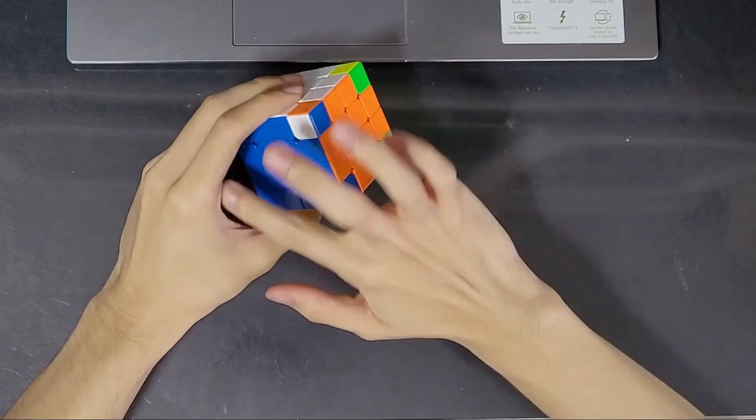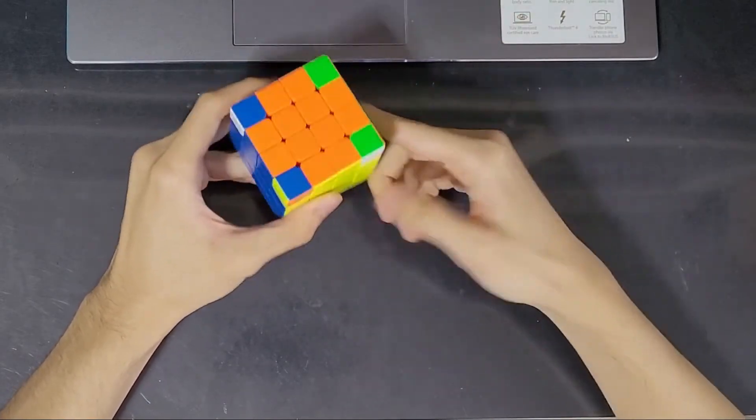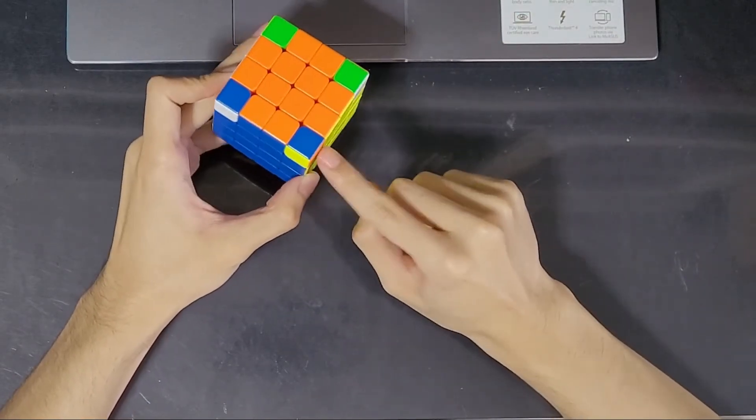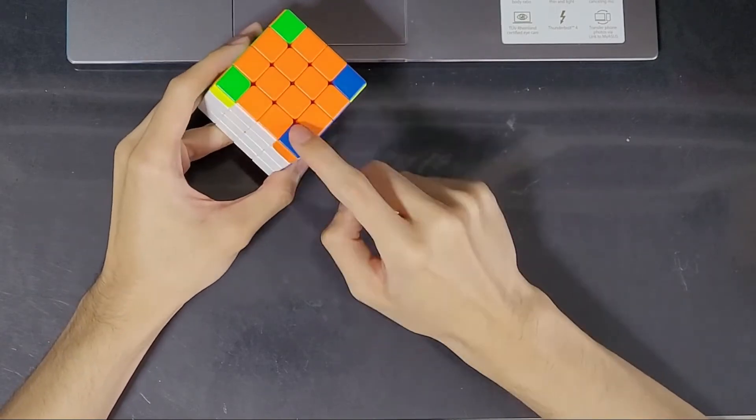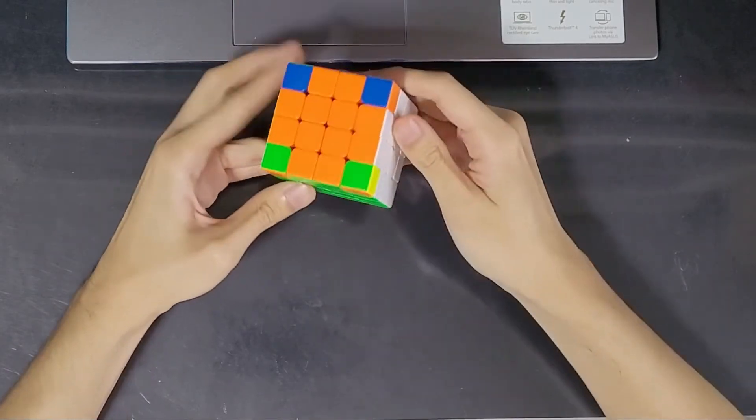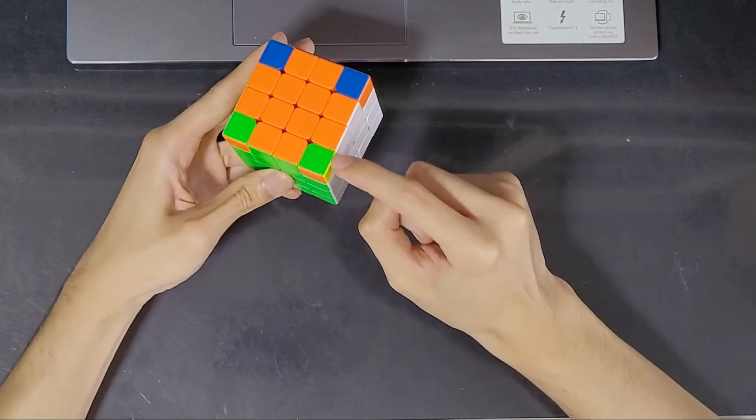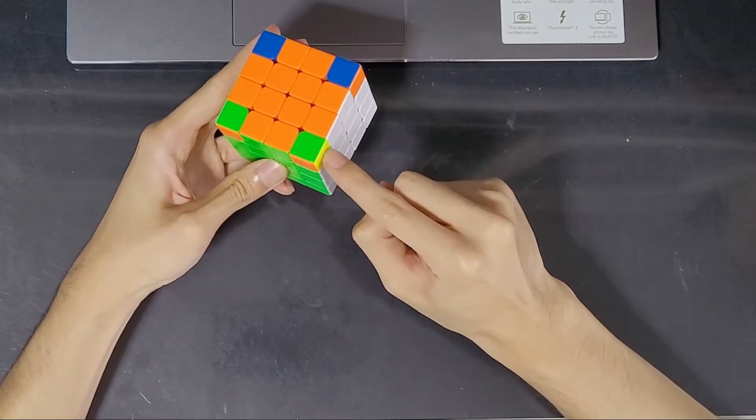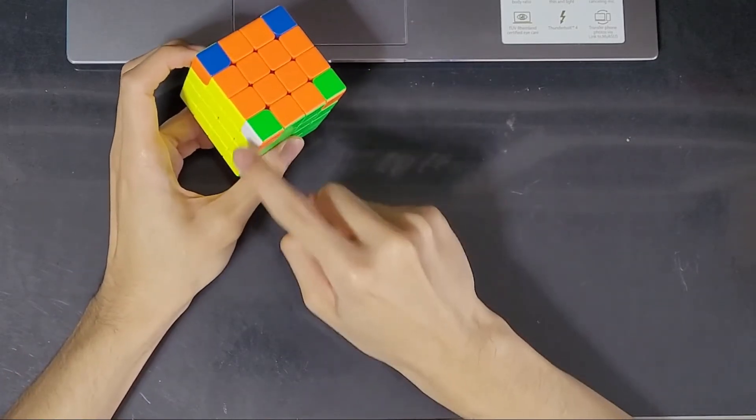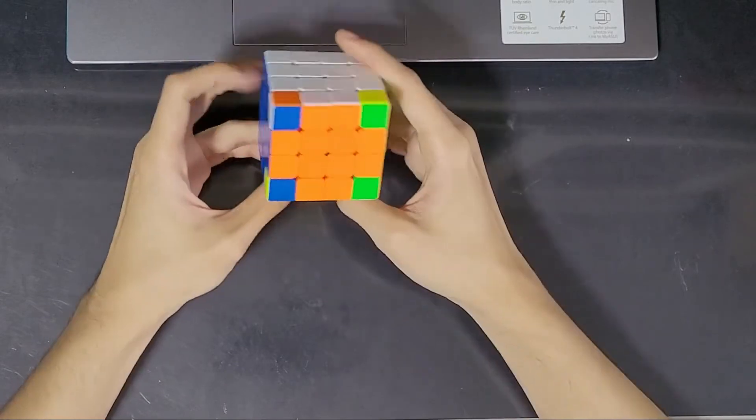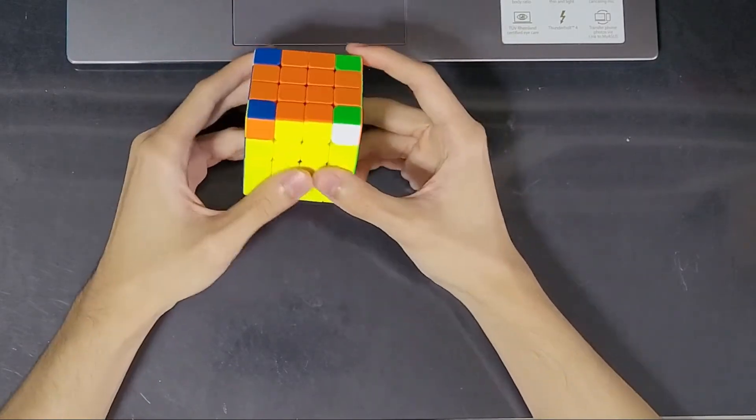So in this case, of course, most of the cube is solved except the corners. And if you look at this corner, it's yellow and orange is in its correct place. But these two, like this corner, green, yellow and orange, belongs over here and likewise green, white and orange. So we have an impossible case.